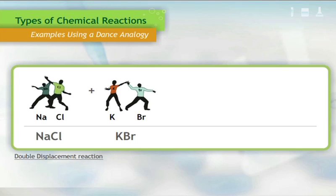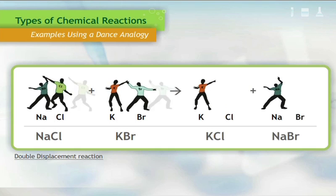Here is an example of a double displacement reaction. Sodium chloride, NaCl, is added to potassium bromide, KBr. The positive elements, sodium and potassium, switch places.